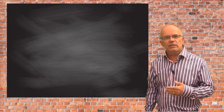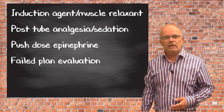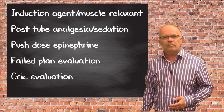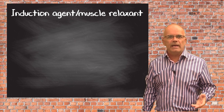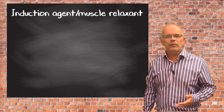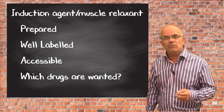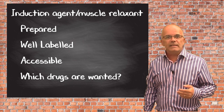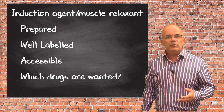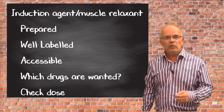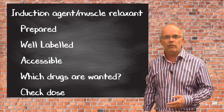Plan is broken down into Induction Agent/Muscle Relaxant, Post-Tube Analgesia/Sedation, Push-Dose Epi, Fail Plan Verbalization, and Cric Evaluation. We need to ensure that the induction agent and muscle relaxants are prepared, well labelled, and accessible. Different practitioners may want different drugs depending on the situation. It should be clear what sedative, muscle relaxant, and vasopressor/inotrope will be used. The dose should be checked before the process begins. Ideally, standardise amounts — for example, always 20ml of propofol and 10ml of rocuronium.